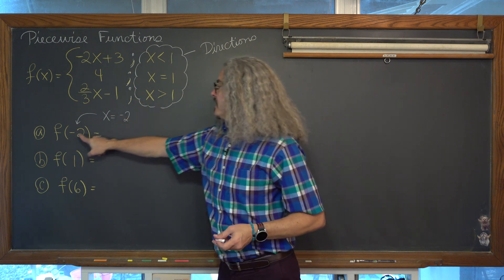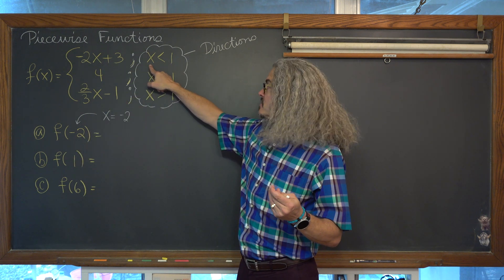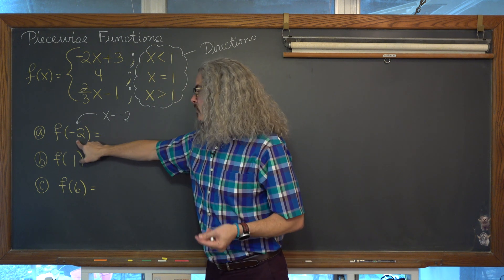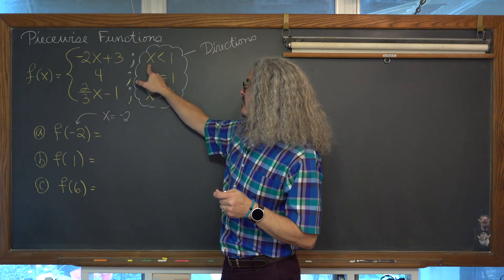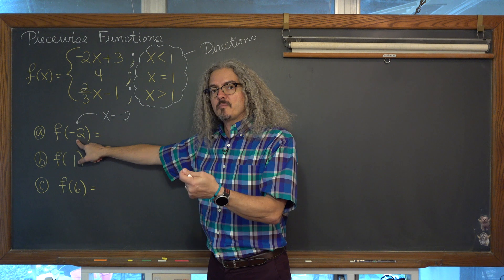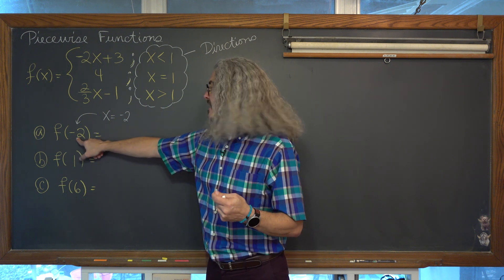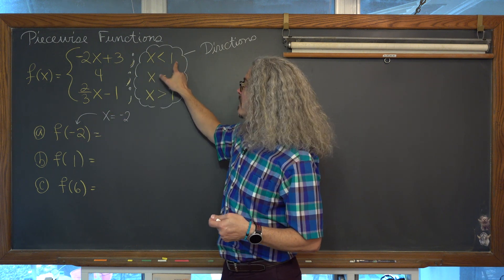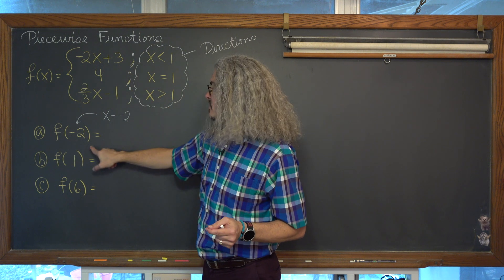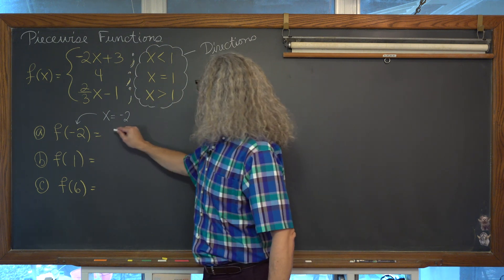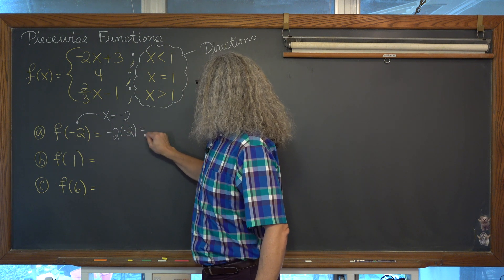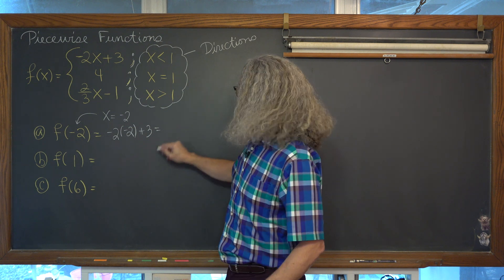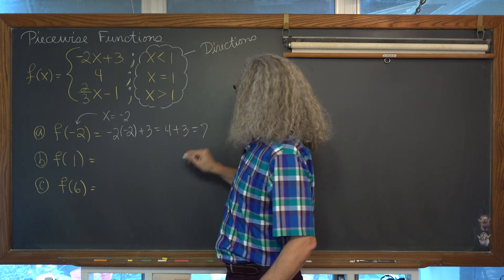f of negative 2: is negative 2 less than 1, equal to 1, or greater than 1? We know that negative 2 is the value of the independent variable x, because it's inside that function notation. Negative 2 is less than 1, so we're going to only use the first piece of this piecewise function to evaluate f of negative 2, and that is going to be negative 2 times negative 2 plus 3, which is equal to 7.